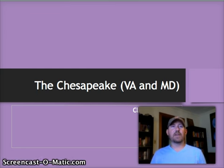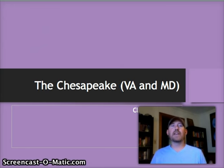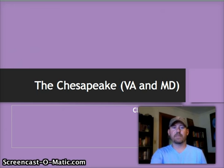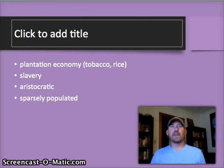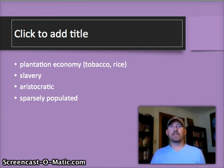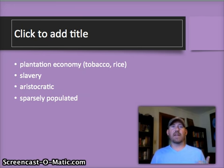Now we're going to narrow it down and begin talking about the Chesapeake, which are basically the two colonies of Virginia and Maryland. You need to know the location of these colonies as well as how those two terms interchange — the Chesapeake being the region and Virginia and Maryland being the two specific colonies. As a general overview of these colonies and their shared characteristics: first, they're both going to come to be based on a plantation economy, using agricultural products like tobacco and rice as the basis for their economies.